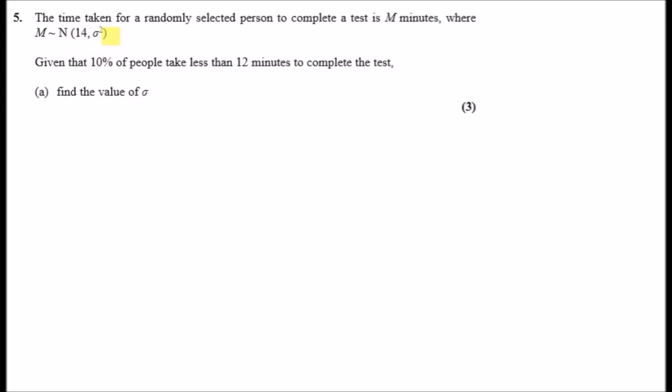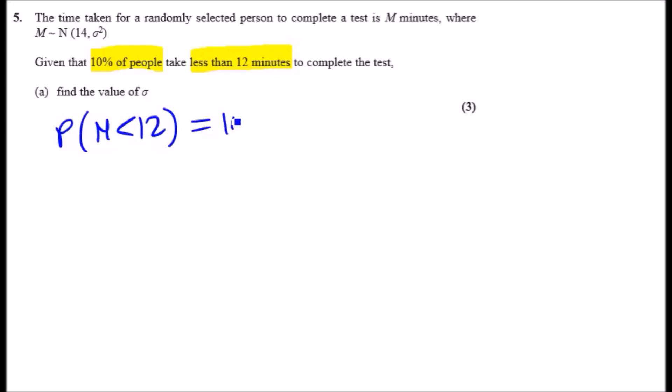Question 5: the time taken for a randomly selected person to complete a test is M minutes, where M is normally distributed with mean 14 and variance σ². Given that 10% of people take less than 12 minutes to complete the test, we need to find the value of σ. We know that P(M < 12) = 0.100.